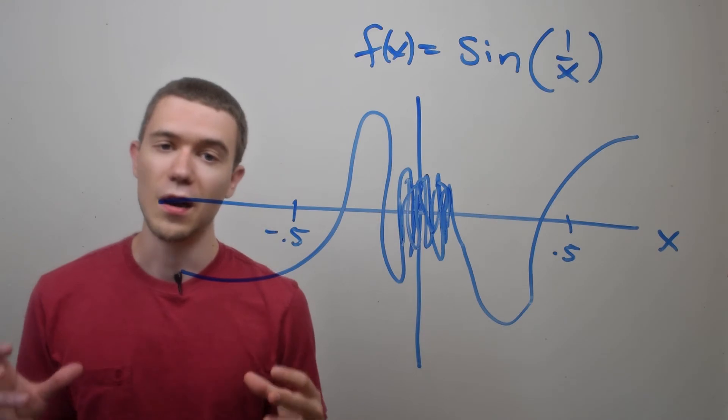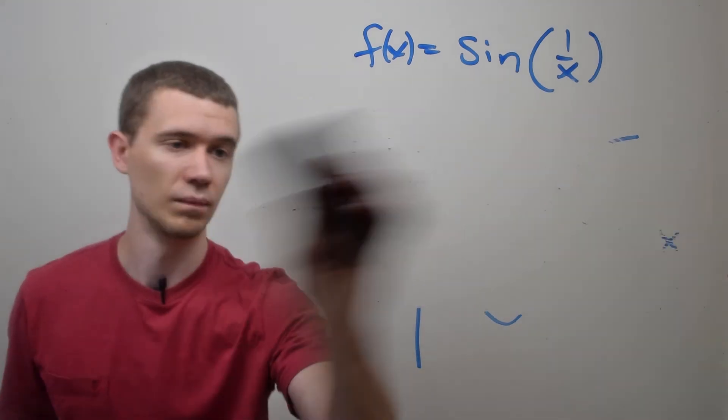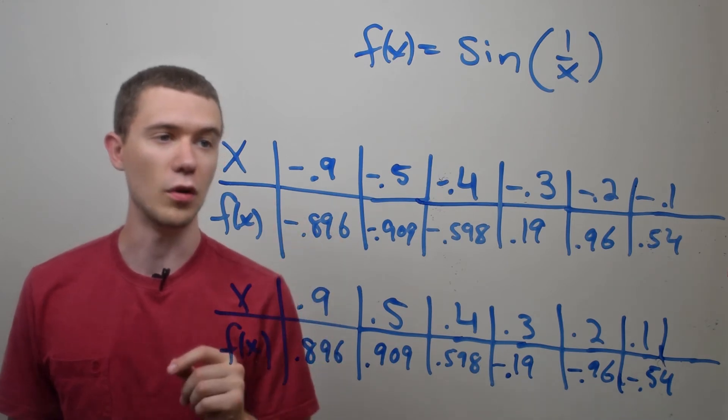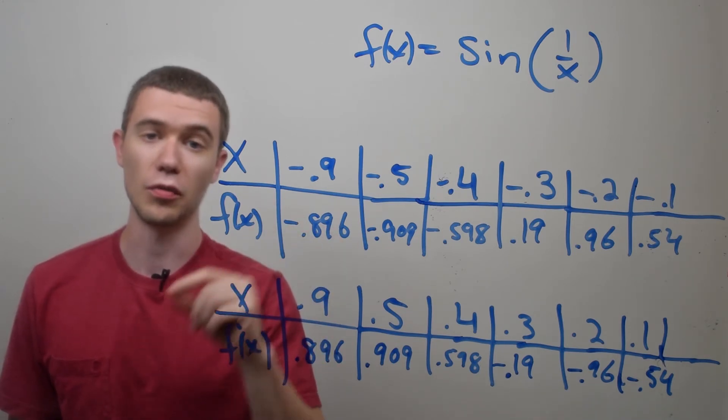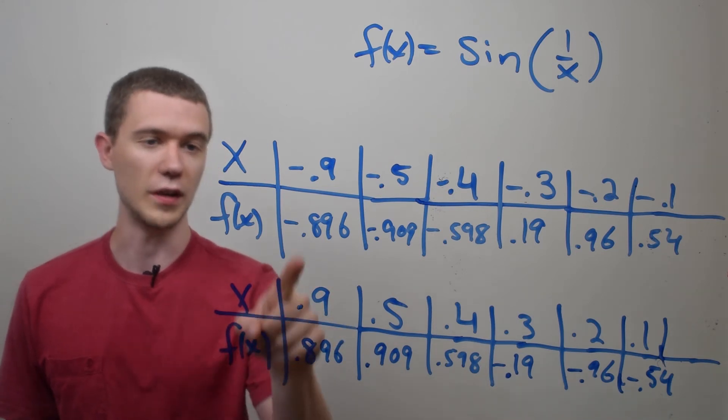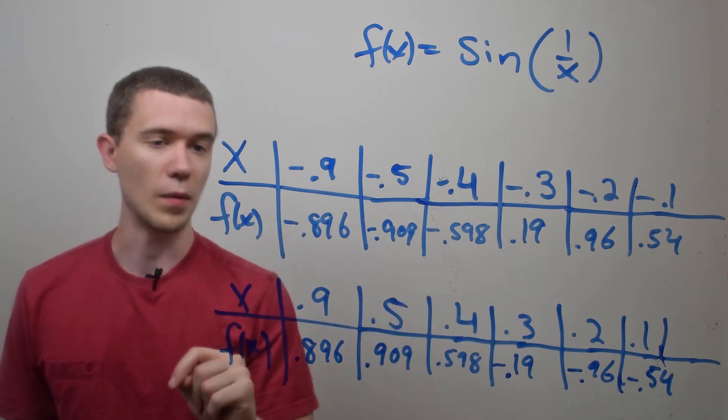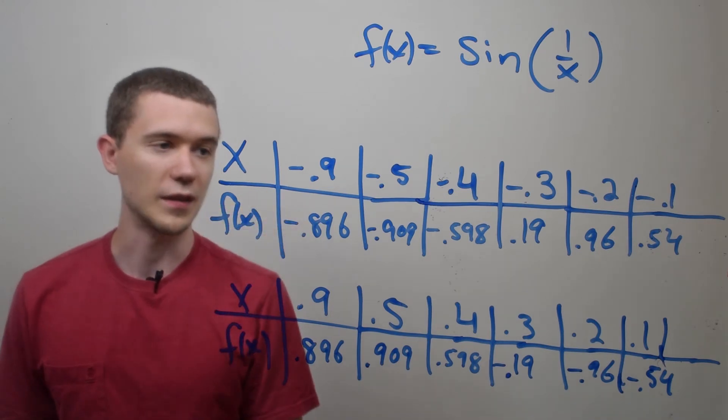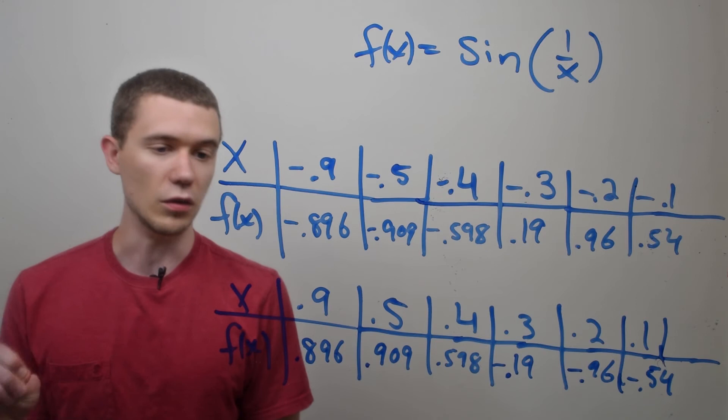Here I've listed a number of values of sine of 1 over x approaching 0 from the left and from the right side. This first row represents us approaching 0 from the left side and the second table is us approaching 0 from the right side.